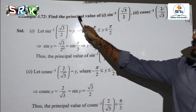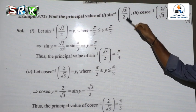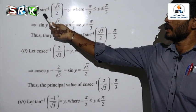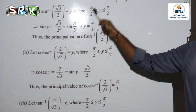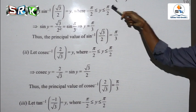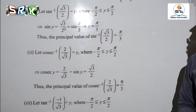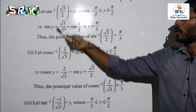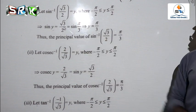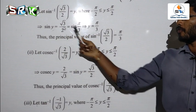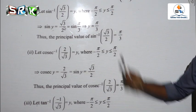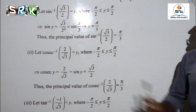Example question: Find the principal value of sin⁻¹(√3/2), cosecant⁻¹(2/√3), and tan⁻¹(-1/√3). Let sin⁻¹(√3/2) = y, where -π/2 ≤ y ≤ π/2. Sin y = √3/2, and sin(π/3) = √3/2. Therefore y = π/3, which is the principal value.